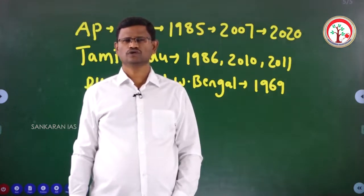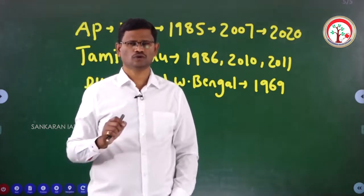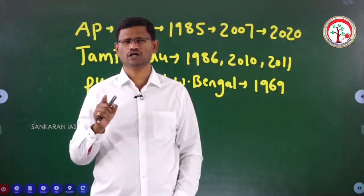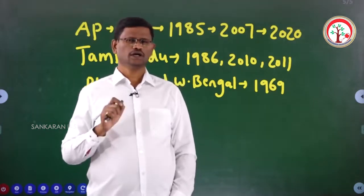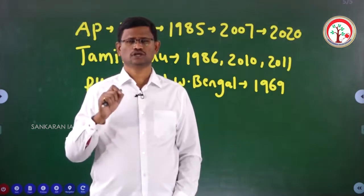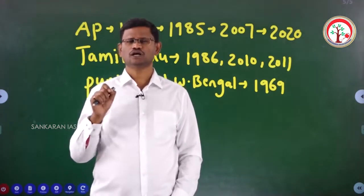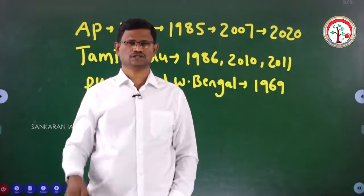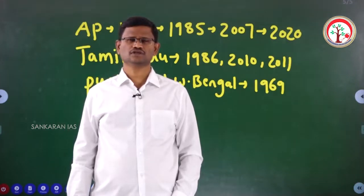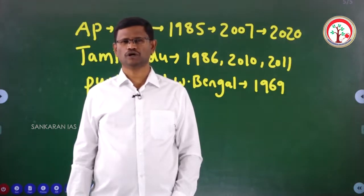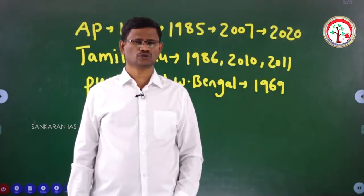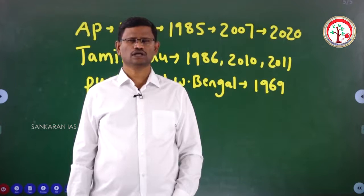Today in this particular video, we will try to discuss about the procedure for the creation or abolition of legislative council. As of now, there are six states which have got a bicameral state legislature — a state legislature which contains two houses, upper house and lower house. At the state level, the upper house is called a legislative council, the lower house is called a legislative assembly.